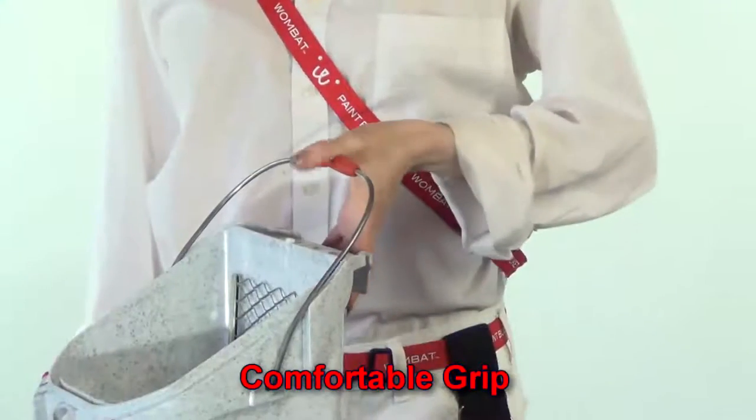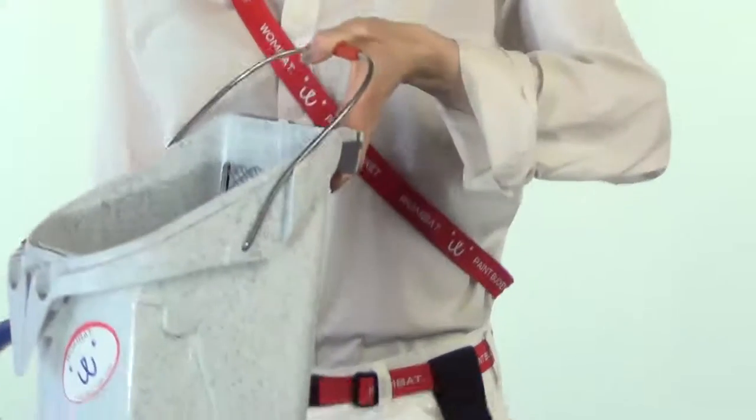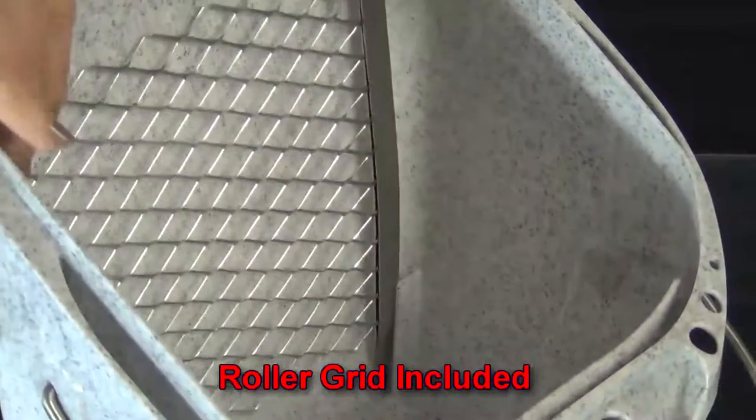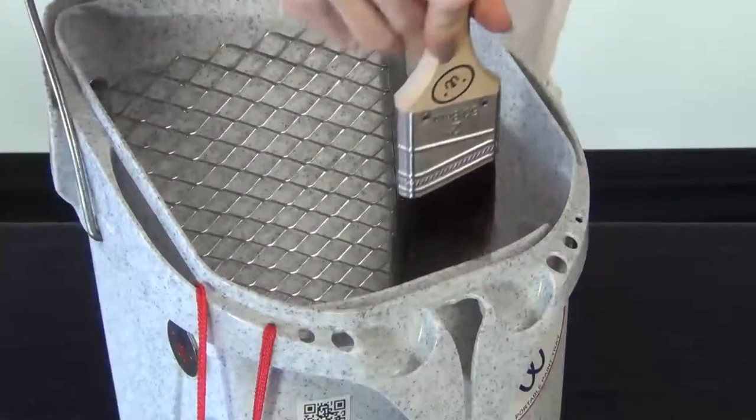The Wombat Port-a-Paint features a comfortable ergonomic grip. There are powerful magnets in both walls to hold your brush, a pro-style grid for your roller, and a lip to groom your brush.